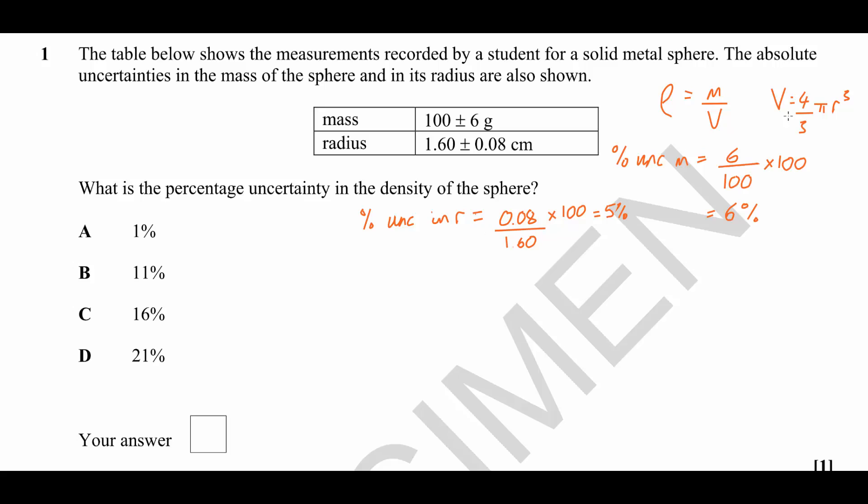Now using that percentage uncertainty in R, we can work out the percentage uncertainty in the volume. Because R is being cubed, it means we must multiply the percentage uncertainty in R by 3. If you'd like to understand better the rules involving combining uncertainties, please click on the video link that should be appearing on your screen now.